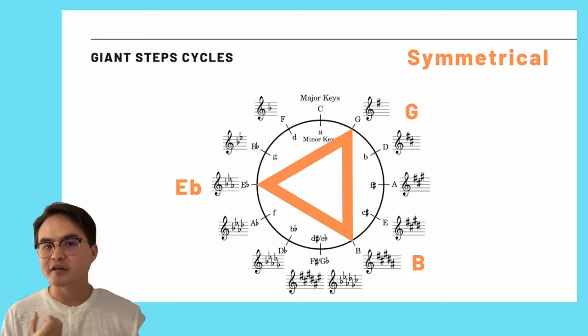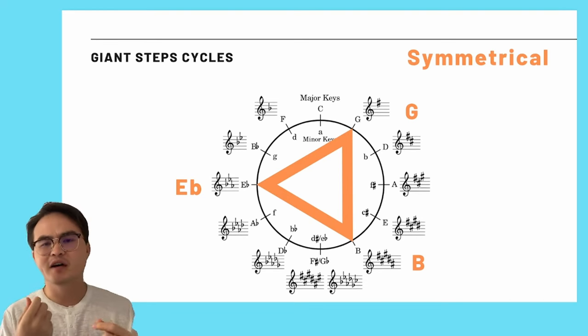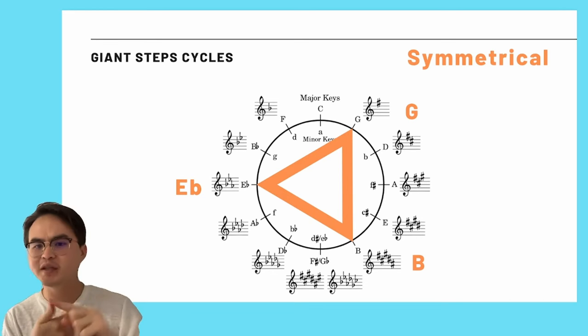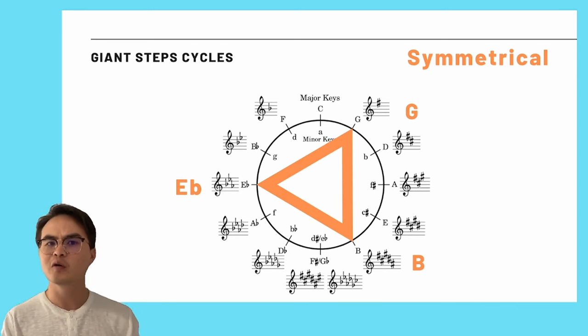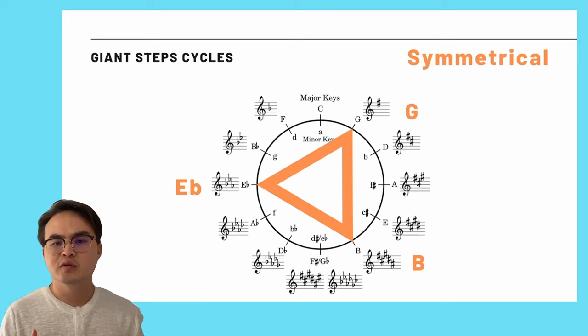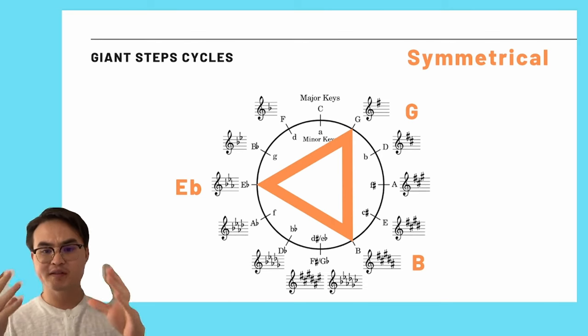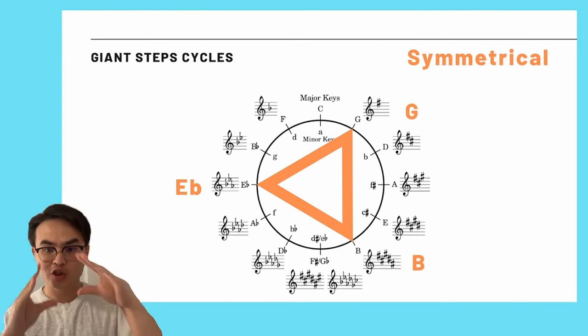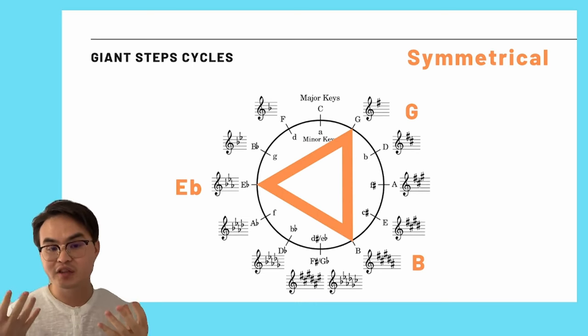In making this algorithm today, my argument is that Giant Steps is not about being in the key of B or the key of G or E flat. It actually has all to do with this symmetry. And I'll show in a moment, if you can express this symmetry, not just in a triangle, but in a different shape, or in a different set of key centers, you can still have Giant Steps.